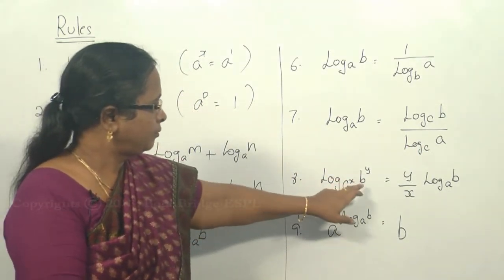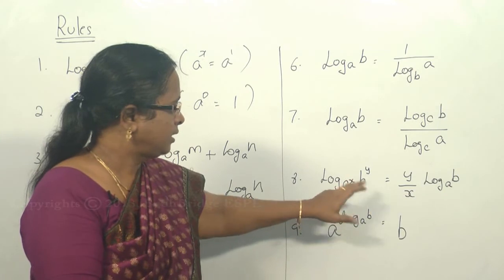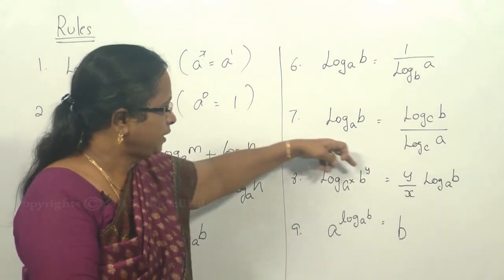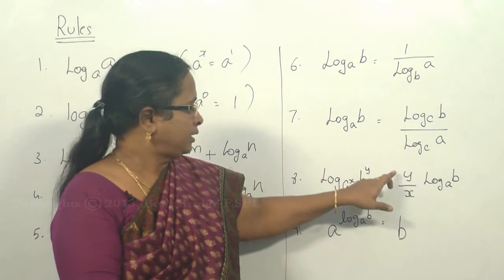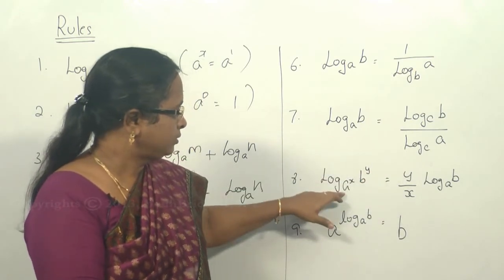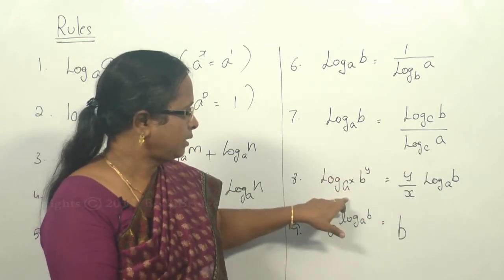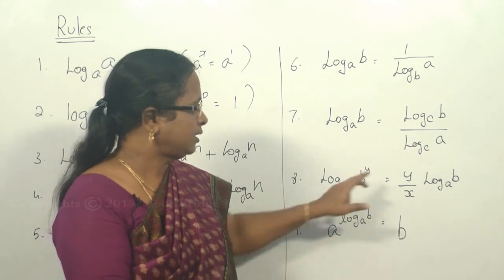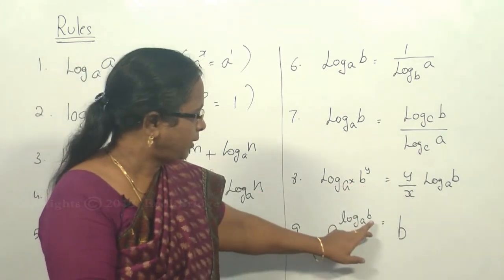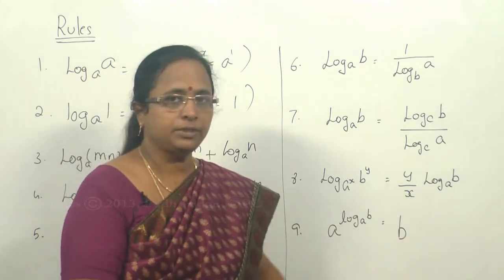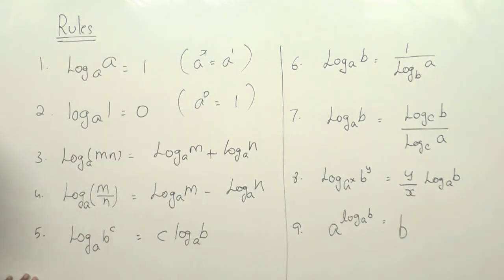Rule 6: log of b to the power y to the base a to the power x — the y comes out from the numerator and the x comes out from the base, giving y over x times log of b to the base a. Rule 7: a to the power log base a of b equals b. These are the key rules used to solve logarithm problems.